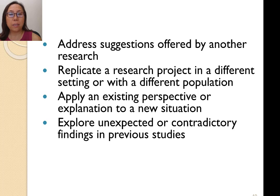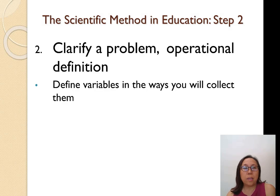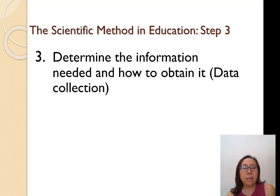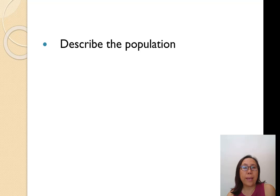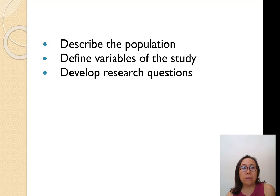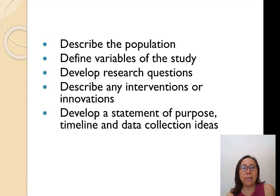Explore unexpected or contradictory findings from previous studies — this makes your study more interesting. Challenge research findings that fly in the face of what you know or believe to be true. Step two is to clarify the problem and define specific variables in ways you will measure them. Step three involves understanding what data you need to collect to answer your practical question, describing the population, defining variables, developing research questions, and identifying any interventions.